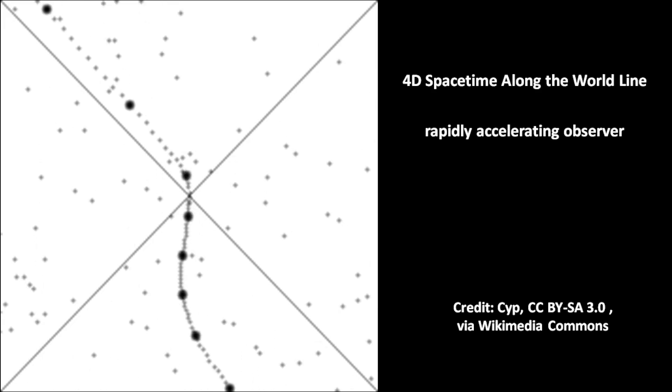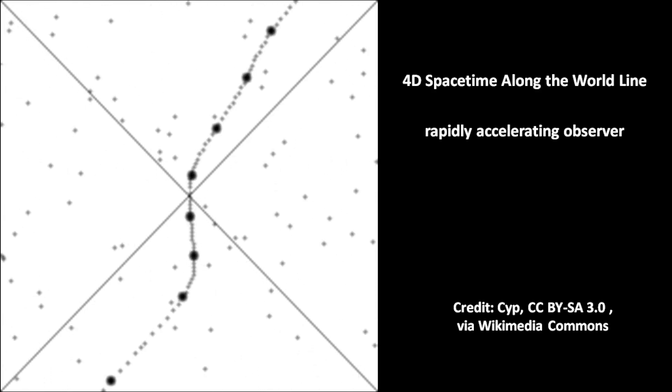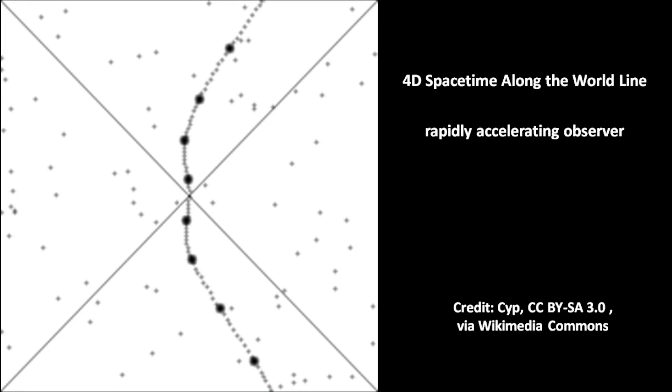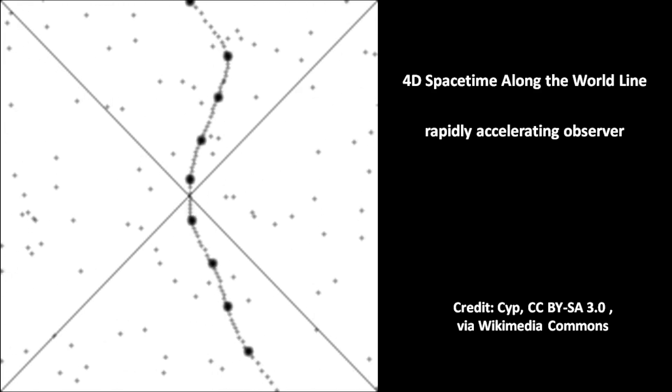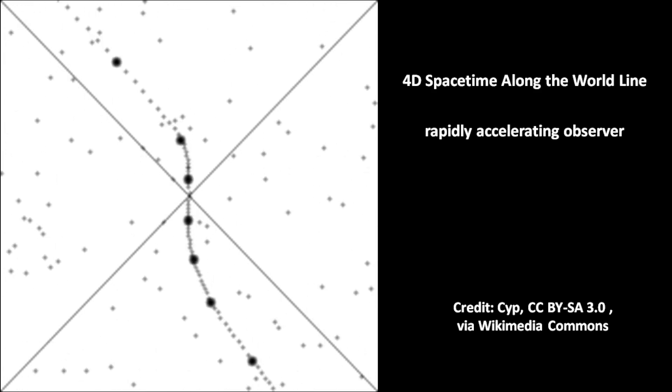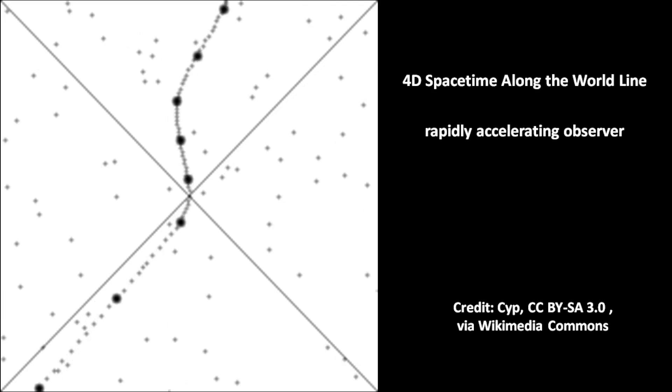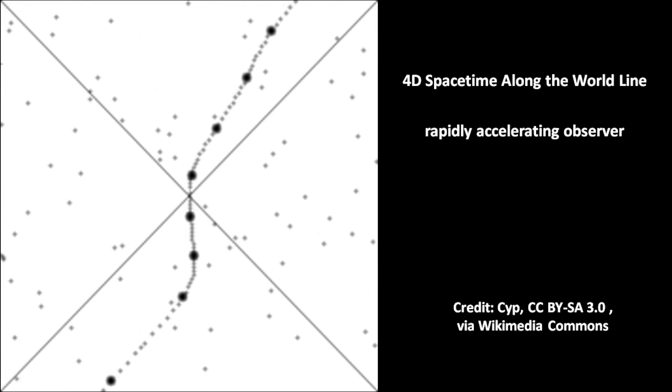The world line is the path of an object in four-dimensional spacetime. The vertical direction is time and the horizontal direction is distance. The small dots are events in spacetime that are stationary relative to each other, as seen by a quickly accelerating observer.